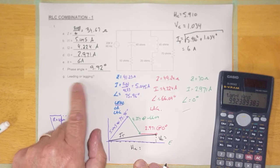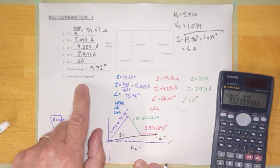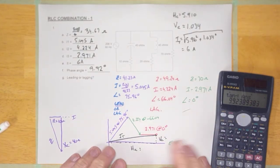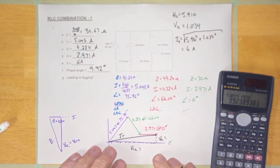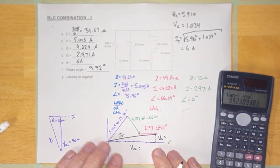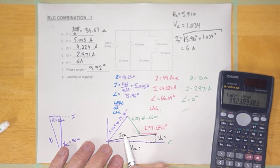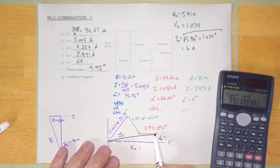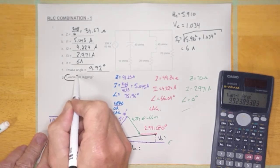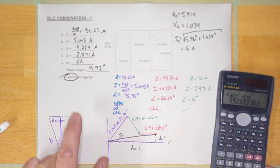The last thing we're going to calculate is whether this circuit is leading or lagging. I total is right here — it's the current I have to identify. Once I've identified it, is it clockwise or counterclockwise? It is counterclockwise, which means that it is leading.